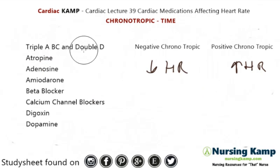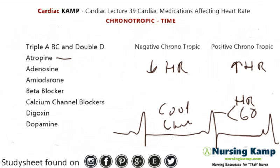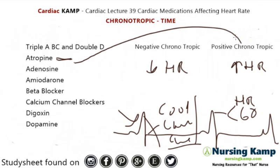The medications follow the mnemonic triple ABC double Ds. First: A — atropine. Atropine is given for symptomatic bradycardia, defined as a heart rate less than 60. If they're symptomatic, they're cool and clammy, have chest pain, or are diaphoretic. Because the heart rate is low and we want it to speed up, atropine is a positive chronotropic.